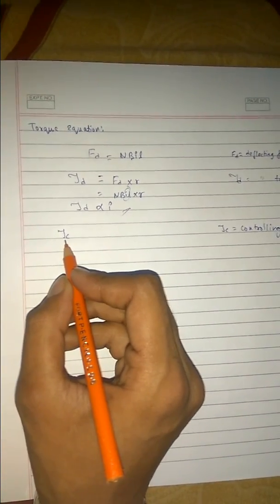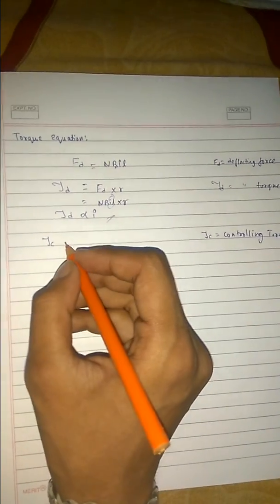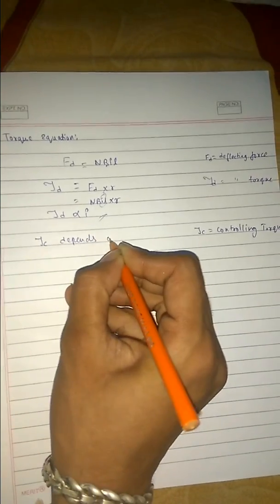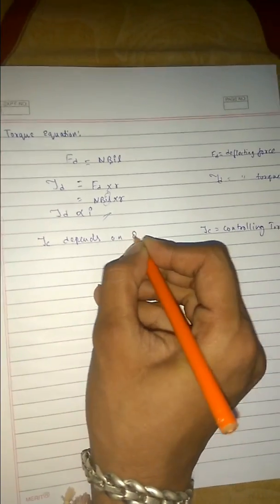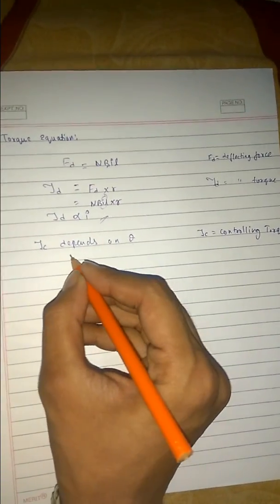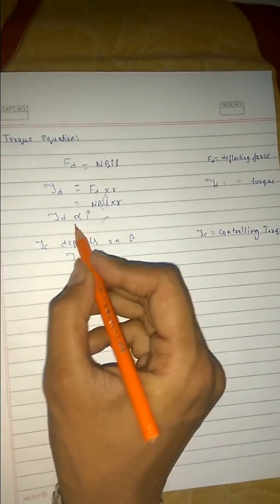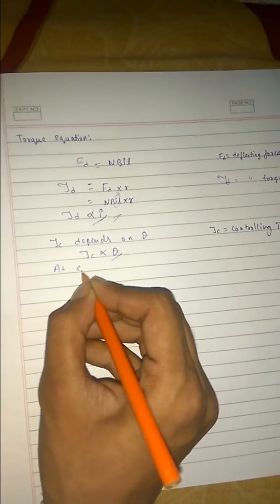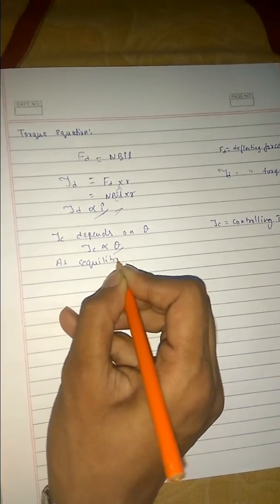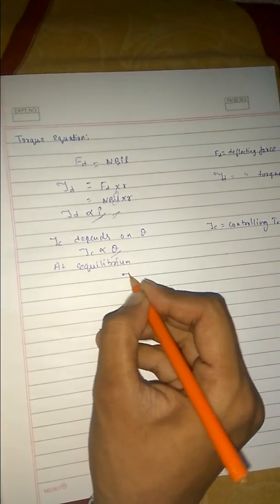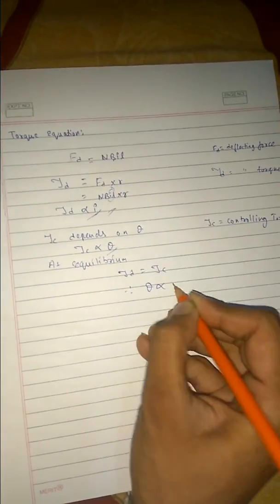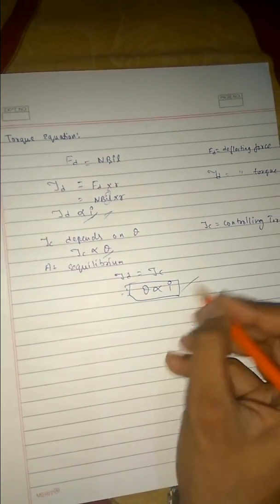Now TAU_C is our controlling torque. This controlling torque depends on the deflecting angle THETA — the angle with which it is deflecting. So TAU_C is proportional to THETA, and T_D is proportional to current I. At equilibrium, deflecting torque equals controlling torque. Therefore we can say the deflecting angle THETA is proportional to the current applied. This is our torque equation.